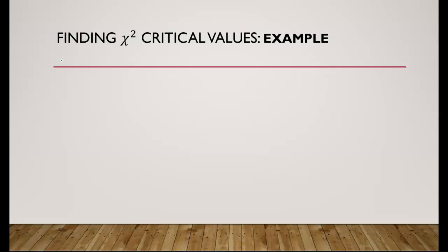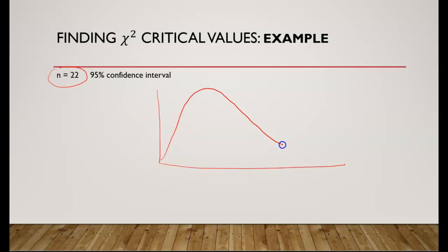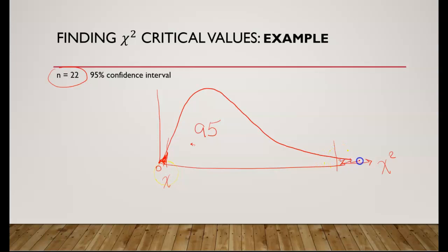Let's find the chi-square critical values. Our sample size is 22 and the confidence interval is 95%. Let's draw the chi-square distribution — remember it is not symmetric; it is a right-skewed distribution and the values start at zero. The 95% confidence level will be located in the middle, so on both sides we'll have different chi-square values: chi-square left and chi-square right — that's why they are called the left limit and right limit.